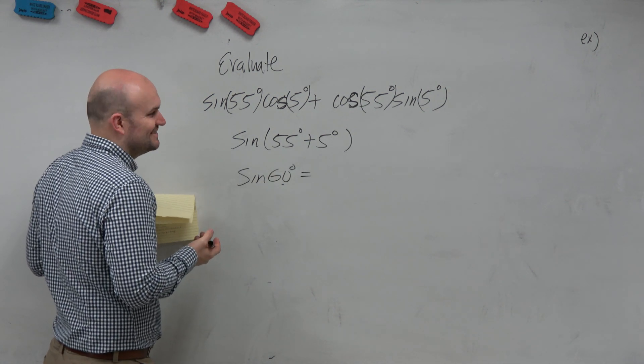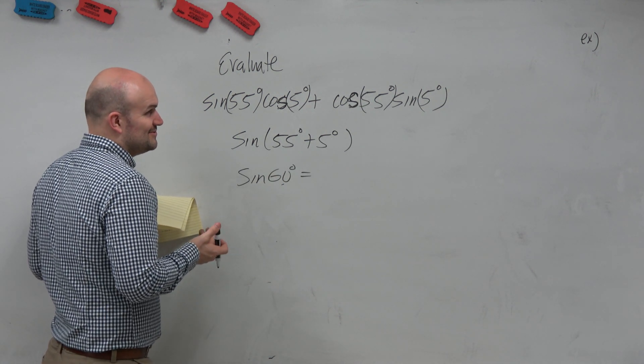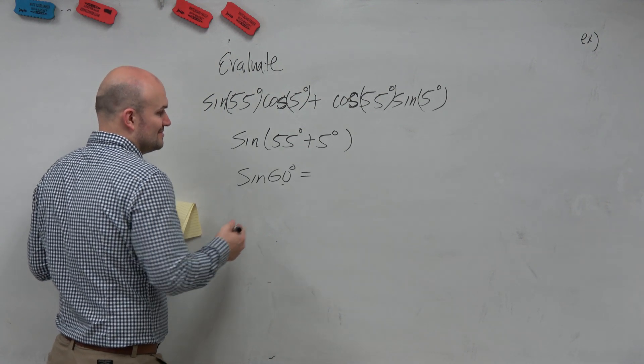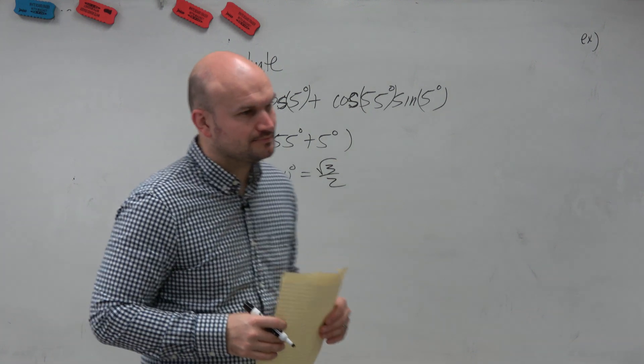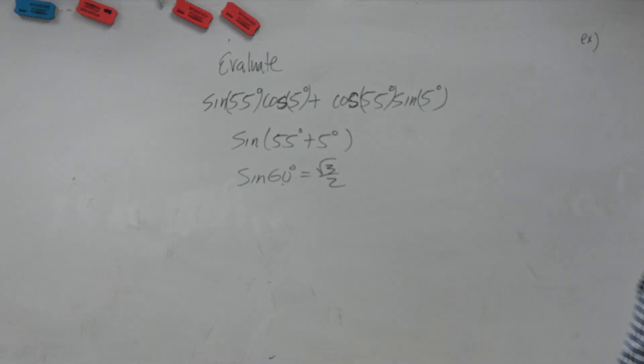And then what do we know about the sine of 60 degrees? We can do it, which is... square root of 3 over 2. Oh, yeah. There we go. That was easy. I like that one. Right? That's all you have to do. Yeah. That's it.